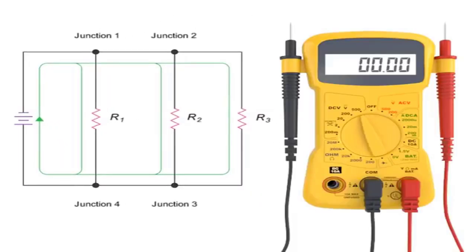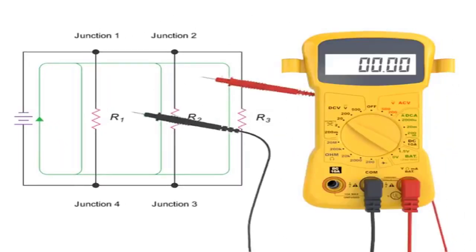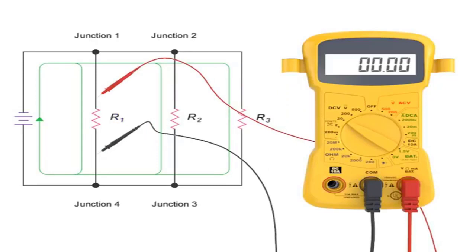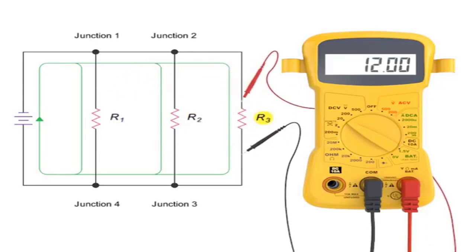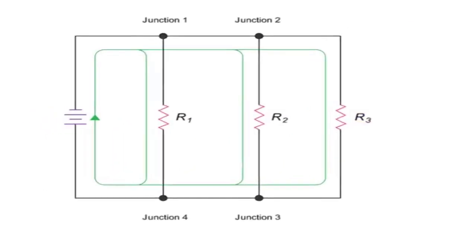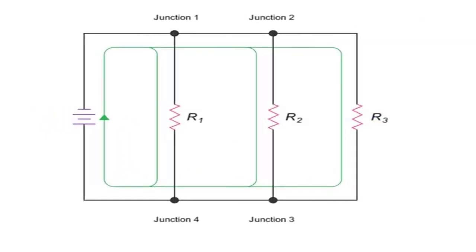An important difference between a series and a parallel circuit is that the voltage in the parallel circuit is the same across all branches. The current along each branch will vary, but when added together, these various branch currents will equal the current at the source.